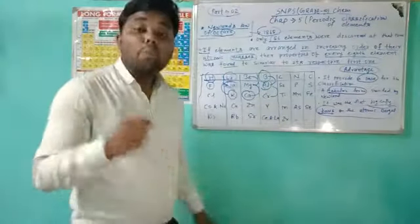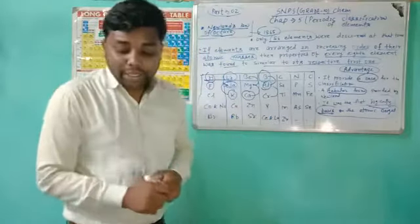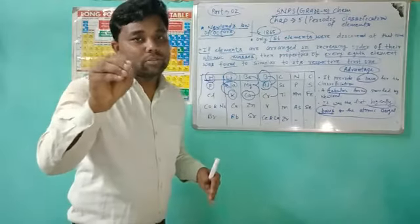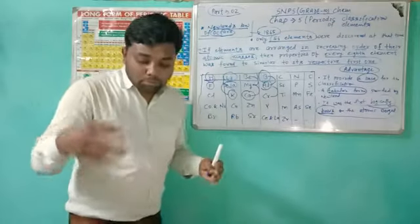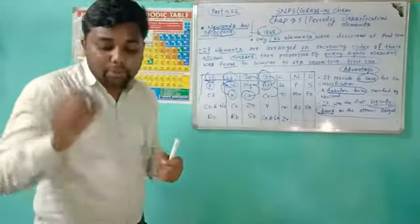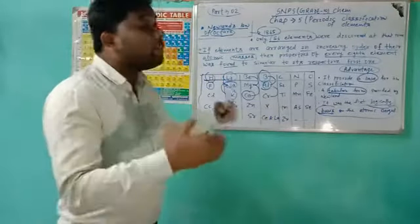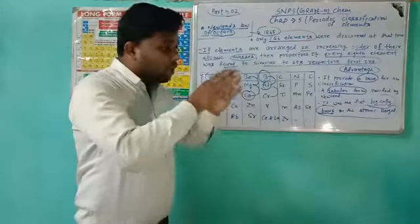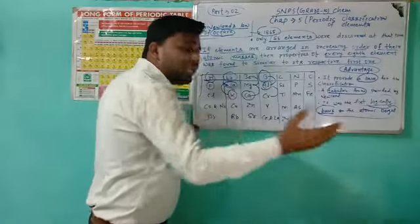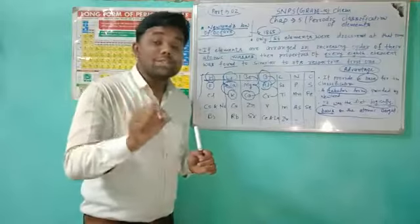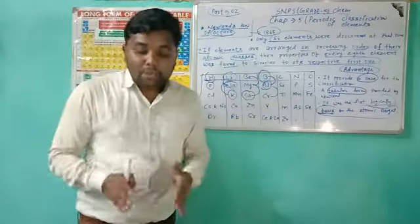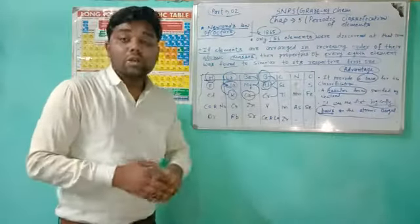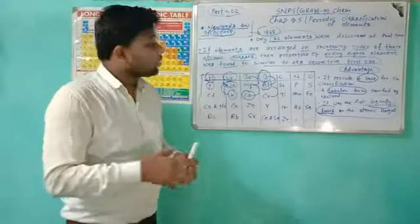Now for the disadvantages. The first disadvantage is that Newlands' Law was applicable only for lighter elements — it was applicable only up to calcium. That means from hydrogen (number 1) to calcium (number 20) are the lighter elements covered. When we go further to heavier elements, this law was not applicable. This is its first disadvantage.